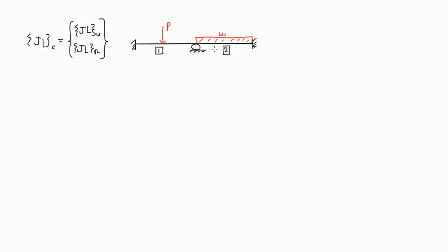So when we draw joint load diagrams, we normally look at the span and cut very close to the joints, and we do the analysis for that member or element. This would be element 1.